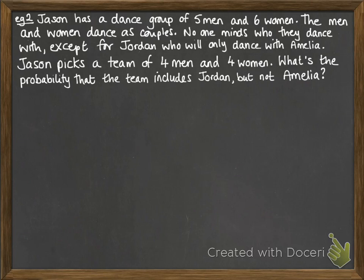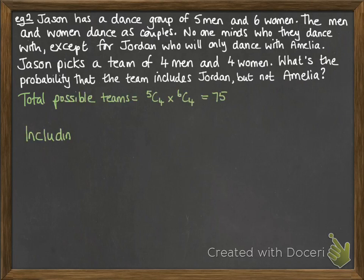Next example: Jason has a dance group of five men and six women. The men and women dance as couples, and no one minds who they dance with except Jordan, who will only dance with Amelia. Jason picks a team of four men and four women. What's the probability that the team includes Jordan but not Amelia? The total possible teams would be five choose four multiplied by six choose four, giving a total of 75.